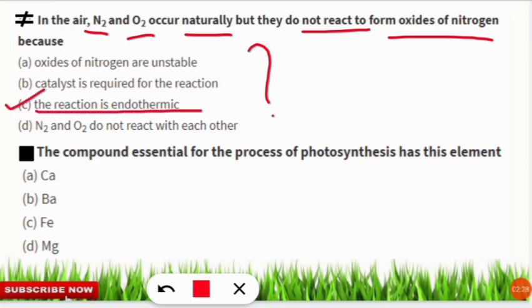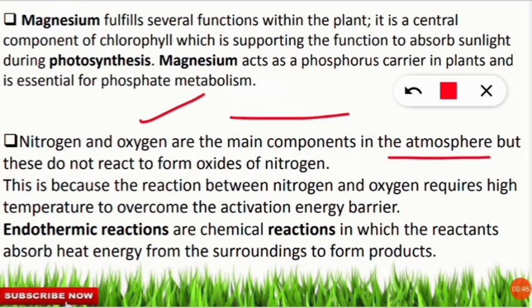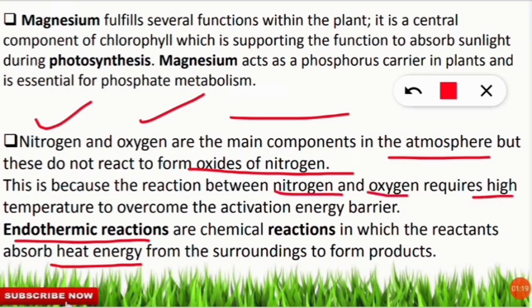Nitrogen and oxygen are the main atmospheric components — nitrogen constitutes 78% and oxygen 21% — but they do not react to form NOx because of the endothermic reaction. In an endothermic reaction, heat energy must be supplied; in an exothermic reaction, heat is released. The reaction between nitrogen and oxygen requires very high temperature to overcome the activation energy, which is not possible in the normal environment.